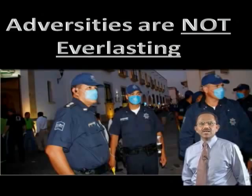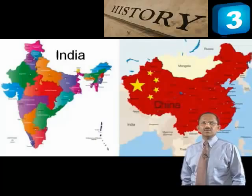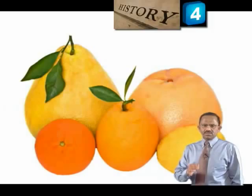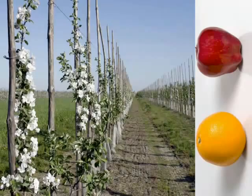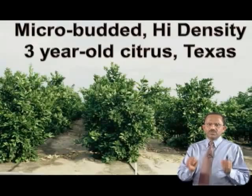Thus, it is true in human history that adversities are not everlasting. HLB is a century-old disease in both India and China, whereas HLB in America is only a decade old. The Chinese used high-density planting to mitigate losses from HLB even before they had access to modern technologies. The citrus industry is at least 25 years behind the apple industry in terms of higher-density planting innovations. I want to project the micro-budded citrus developed in Texas as the new innovation for the citrus industry.